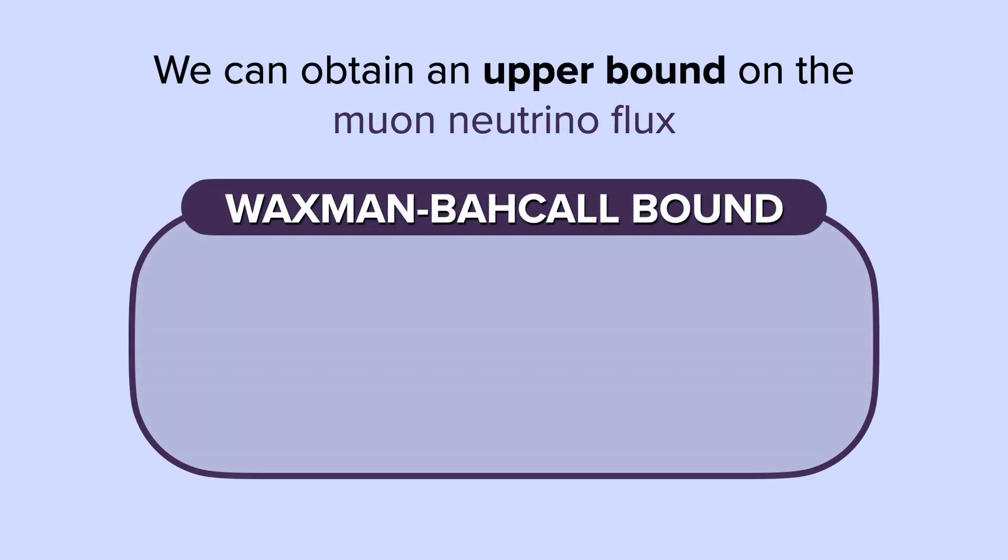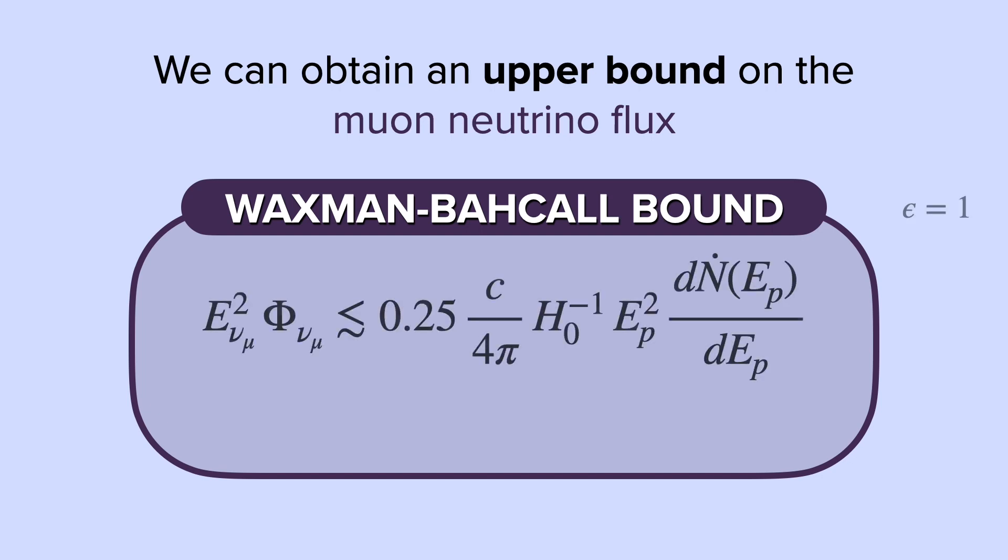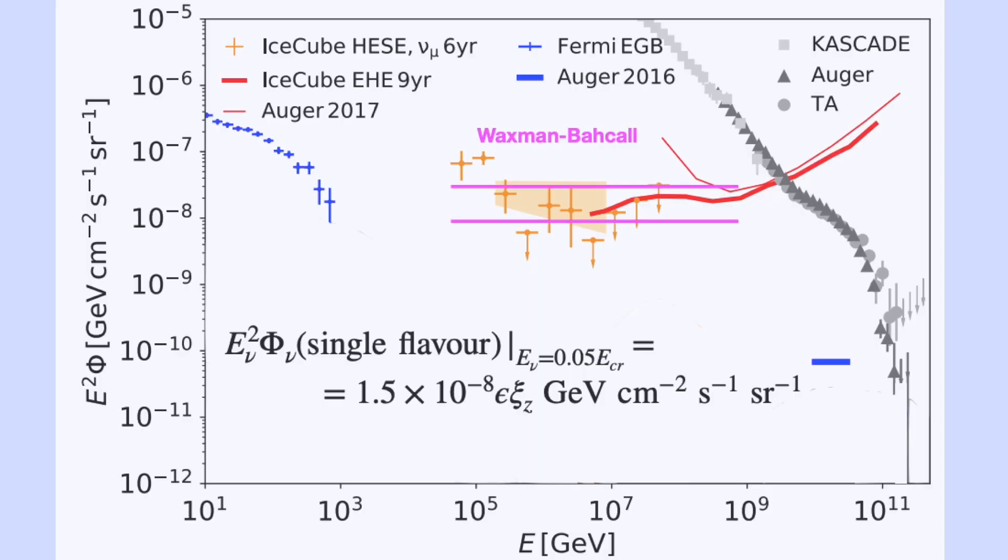With these equations, we can obtain an upper bound on the muon-neutrino flux. This is often called the Waxman-Bahcall bound. Constructing these bounds can be quite useful when it comes to interpreting the data that we see today. Here we have a plot of the flux from different sources, but let's focus on the neutrino flux in yellow.